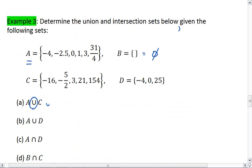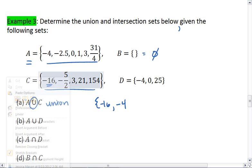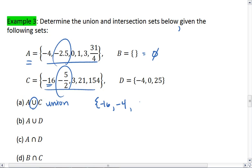So here, we're looking at the union of A and C. So we're looking at the set of all the elements from both. So we'll take negative 16. We'll take negative 4. We'll realize that negative 5 halves and negative 2.5 are the same. So we can express them either way. I'll go ahead and just write it as negative 5 halves.